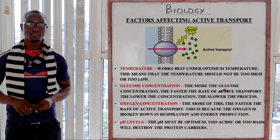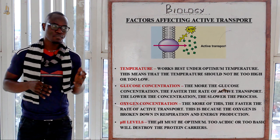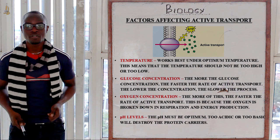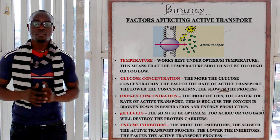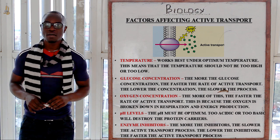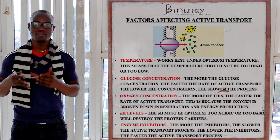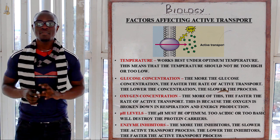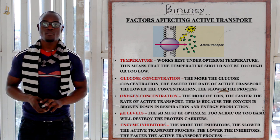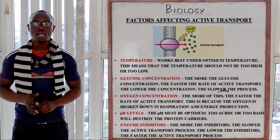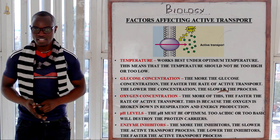Next, let's look at pH level. The pH must be optimum — it must not be too basic or too acidic. Finally, let's look at enzyme inhibitors: the more the enzyme inhibitors, the more energy will be produced at a very low rate, and therefore this will affect active transport. Enzyme inhibitors should not be present for active transport to function optimally — the more the enzyme inhibitors, the lower the rate of active transport.